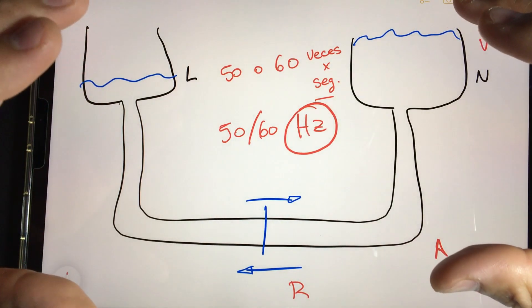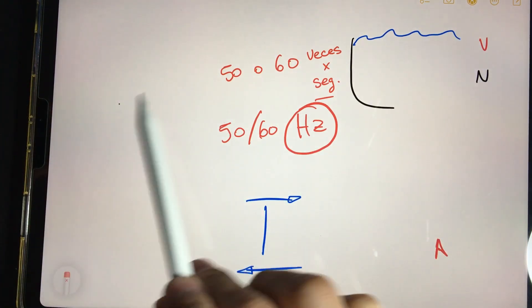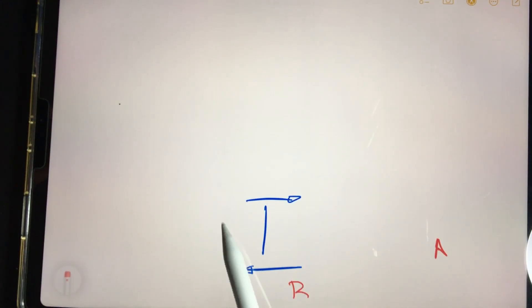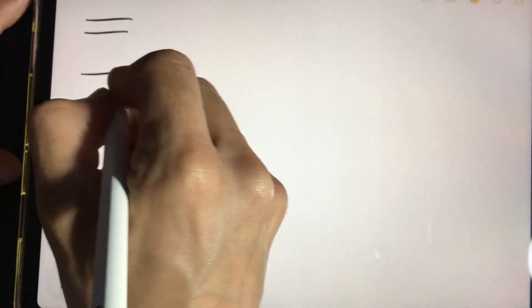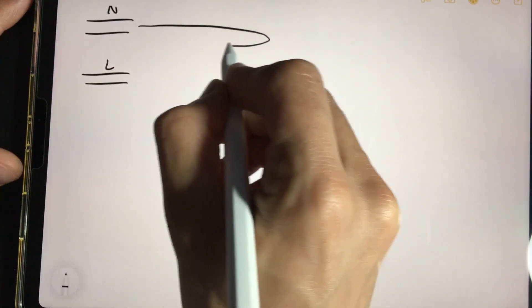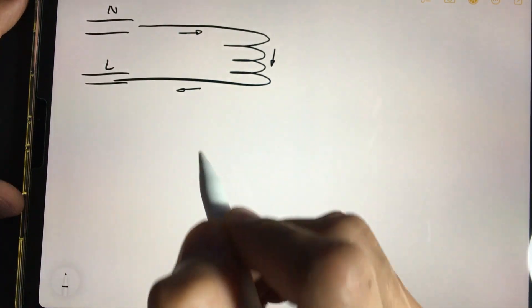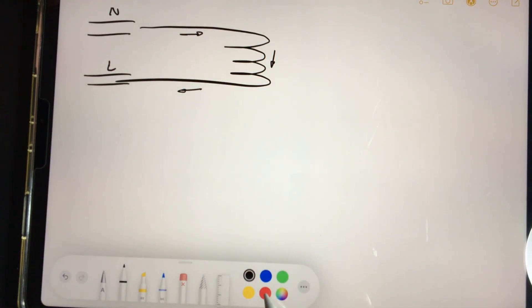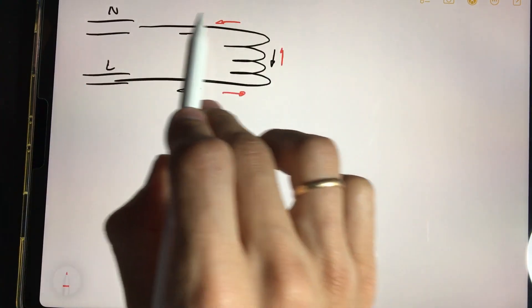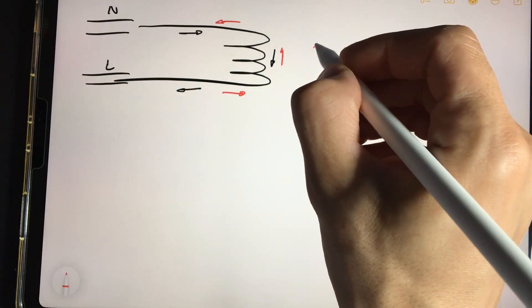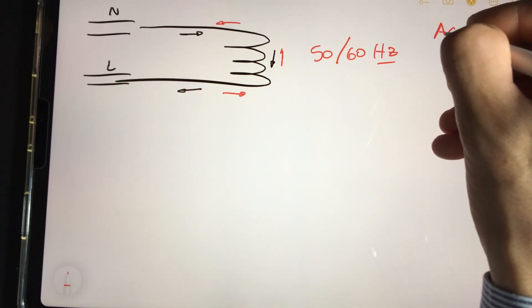Now that we understand what alternating current is, we are going to draw it in another way, in a more electronic way, to understand it better. We are going to do a cleaning of our electronic blackboard and we will draw the electrical conductors. Here we would have the neutral and the line, and here we plug in a circuit in this case. The electrons start to circulate to one side. But in the next moment in time, they would already start to circulate to the other side. They constantly do this back and forth, back and forth, and they do it 50 or 60 times per second.